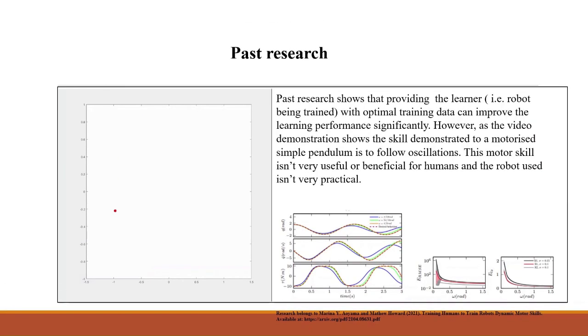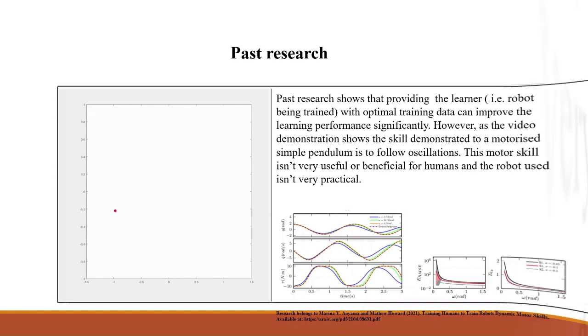Past research shows that providing the learner with optimal data can improve the learning performance significantly. However, as the video demonstration shows, the skill demonstrated to a motorized simple pendulum is to follow oscillations. This motor skill isn't very useful or beneficial for humans and the robot used isn't very practical.